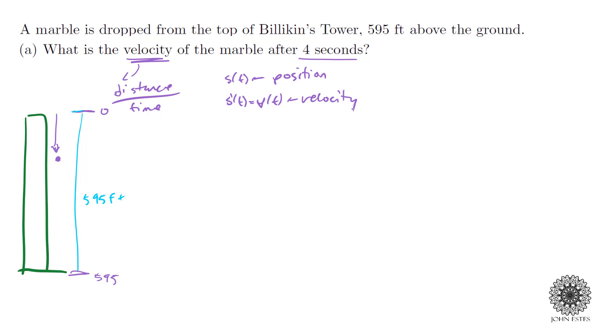In general for a free falling object, the position is one half your gravity constant t squared. If you're dealing with feet, your gravity constant is 32 feet per second squared. In meters, gravity is 9.8 meters per second squared. Since I'm dealing with feet, my position formula is one half times 32 t squared, or 16t squared, and that will stay the same for any velocity question dealing with feet.